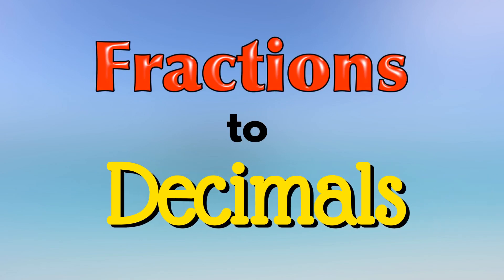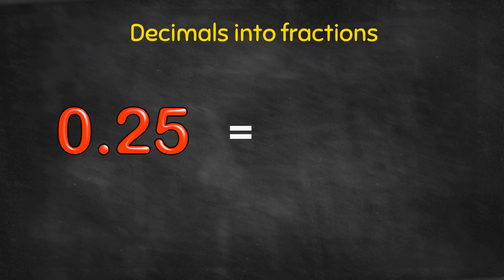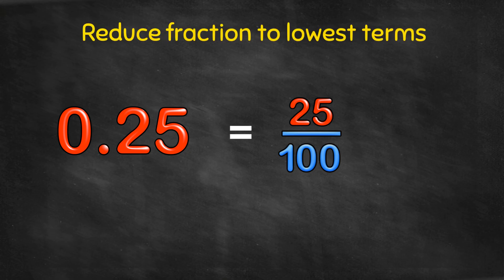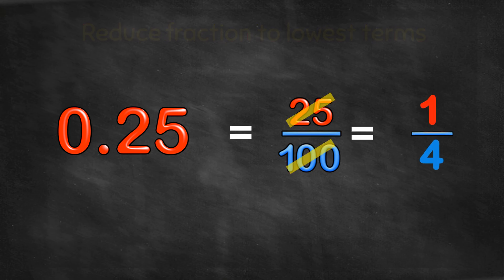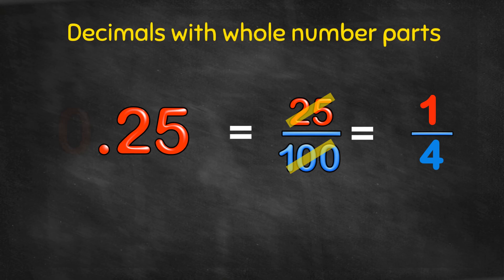Fractions to Decimals Part 1. You've changed decimal numbers into fractions, reduced those fractions to lowest terms, and changed decimal numbers with whole number parts.